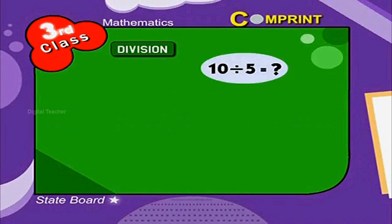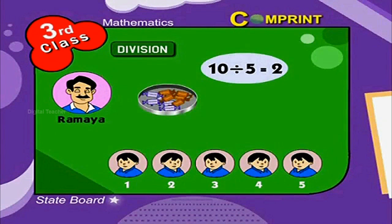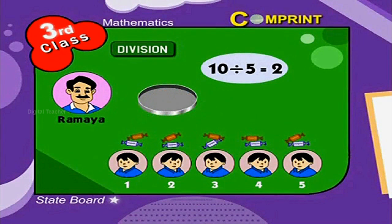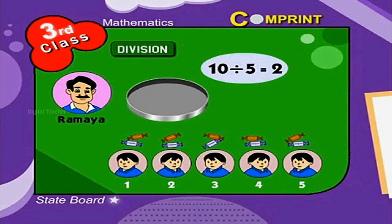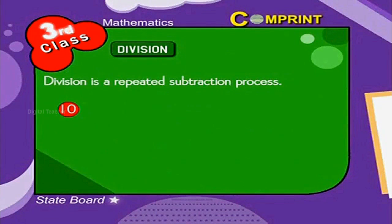Look at the example. 10 divided by 5 is equal to 2. Ramayana has 5 sons. He bought 10 chocolates. First, he gave 1 chocolate to each of his sons. Next, once again he gave 1 more chocolate to them. Now the plate is empty. Thus, we can say that Ramayana distributed 2 chocolates to each of his 5 sons. Division is a repeated subtraction process.